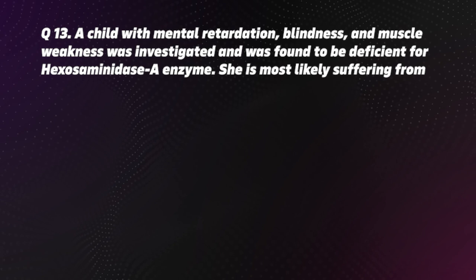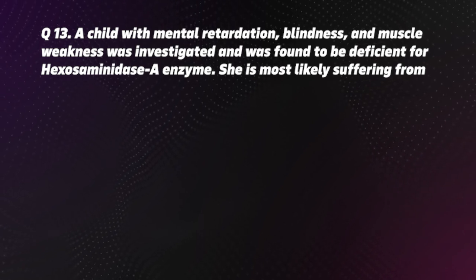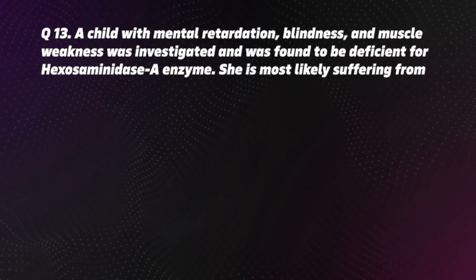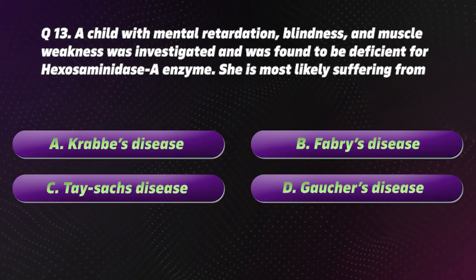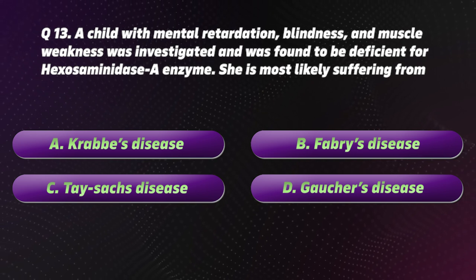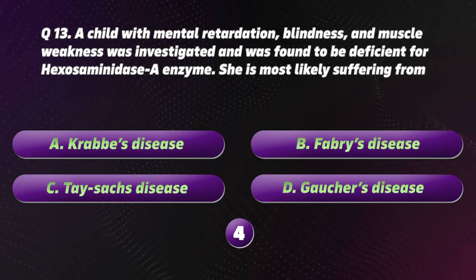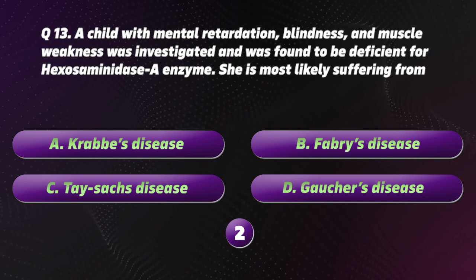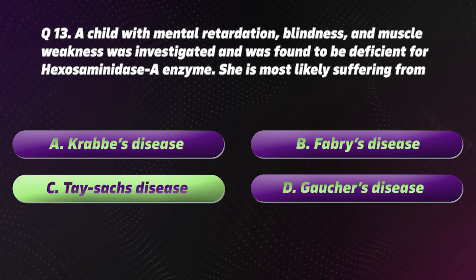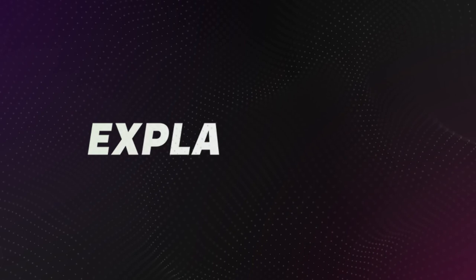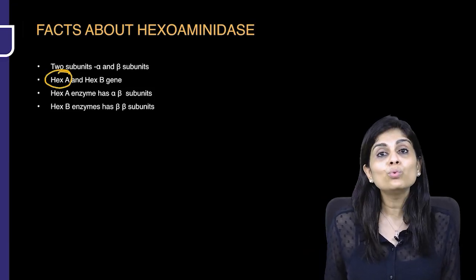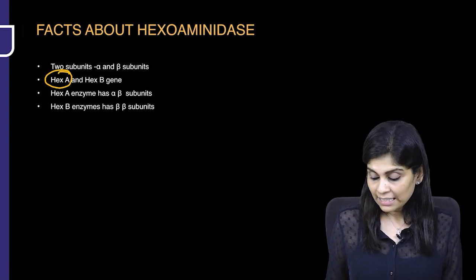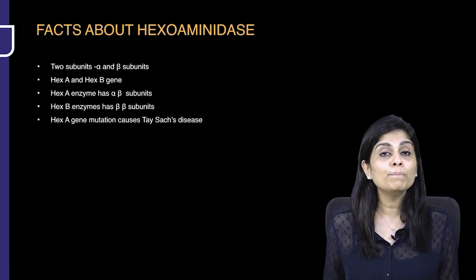Question 13. A child with mental retardation, blindness, and muscle weakness was found to be deficient for hexosaminidase A enzyme. She is most likely suffering from: A. Krabbe's disease, B. Fabry's disease, C. Tay-Sachs disease, D. Gaucher's disease. The correct option is C, Tay-Sachs disease. Hexosaminidase A gene mutation causes Tay-Sachs disease.